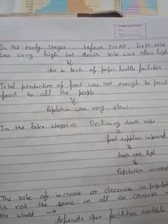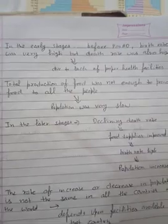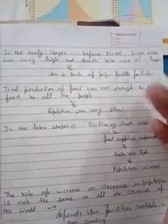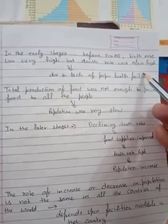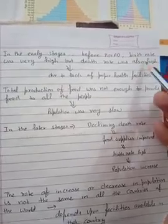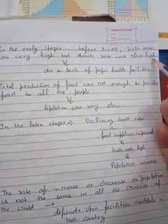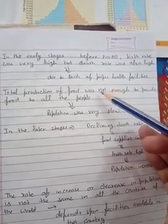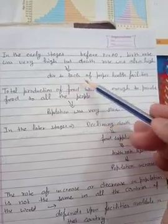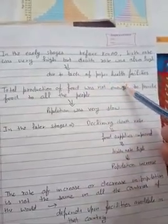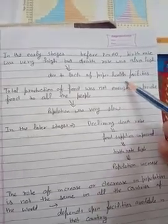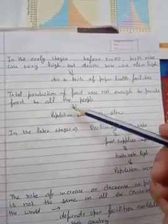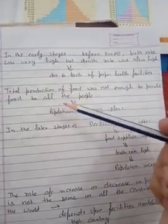In the early stage, birth rate was very high, but death rate was also very high. This was due to the lack of proper health facilities. Also, the total production of food was not enough to provide food to all the people. So the change or increase in population was very slow.